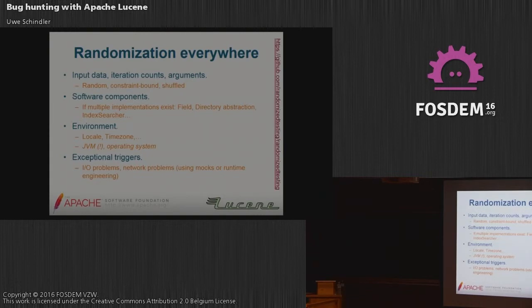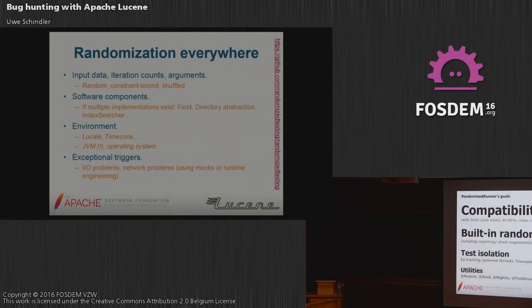You can also randomize the environment: locale, time zone. Another thing — listed in italics — is exchanging the JVM, operating system, and JVM options. You can also insert mock IO problems or network problems into your tests. Randomization is not bad for tests as long as you have a framework that makes it predictable and reproducible.